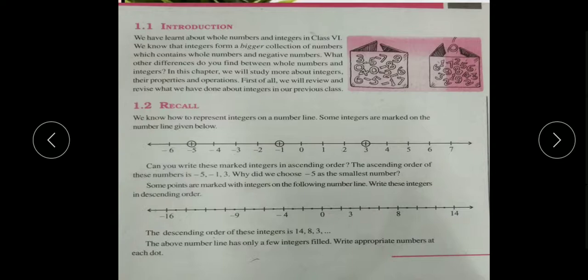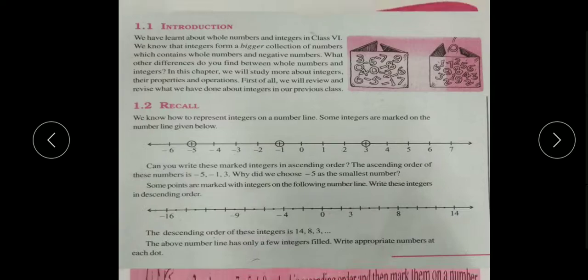The above number line has only a few integers. Write appropriate numbers at each dot. This number line you have to complete with other remaining numbers. Suppose here is minus 16, what will come between, what will come here - you have to complete the number line. And this is your homework for today. You have to do this homework in your maths notebook. And this is also your homework, friends.